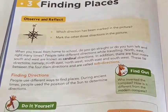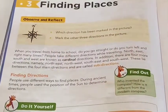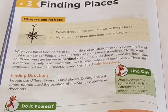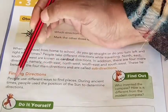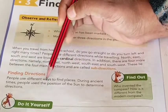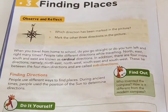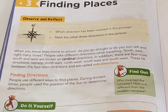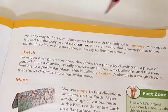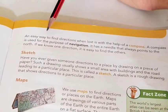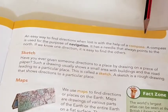Next is finding direction. People use different ways to find places. During ancient times, people used the position of the sun to determine direction. Sun ki position ko direction determine karne ke liye use karte the. An easy way to find direction when lost is with the help of a compass.